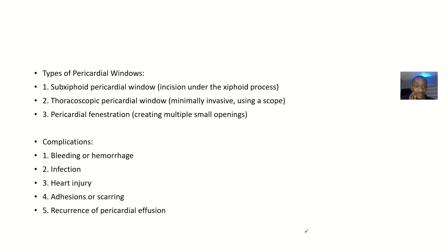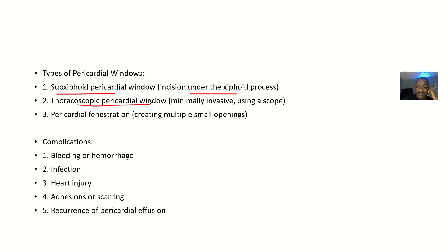Types of pericardial windows: you have the subxiphoid pericardial window — the sternum is here, and beneath it is the xiphoid, so you approach the heart through the xiphoid, making an incision under the xiphoid process of the sternum. Then you have the thoracoscopic pericardial window, which is minimally invasive — you're not cutting too much and you use a scope. Then there's pericardial fenestration, which involves creating multiple openings.